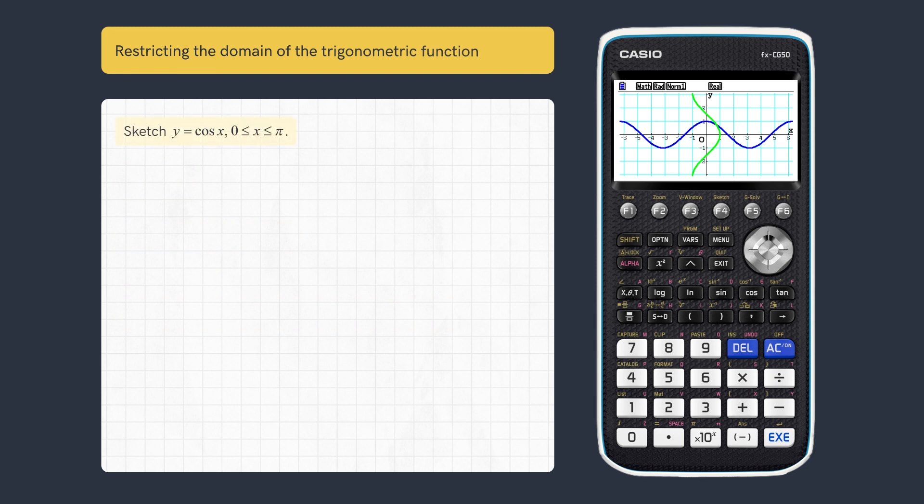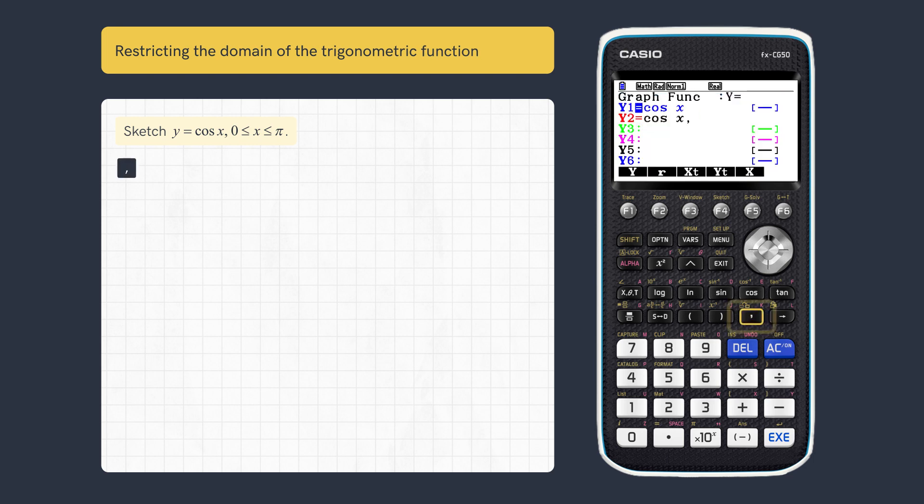So let's sketch the function in this interval. Enter a second function and a comma, and open a square bracket. Enter the lower bound, then the upper bound, close the bracket and execute.